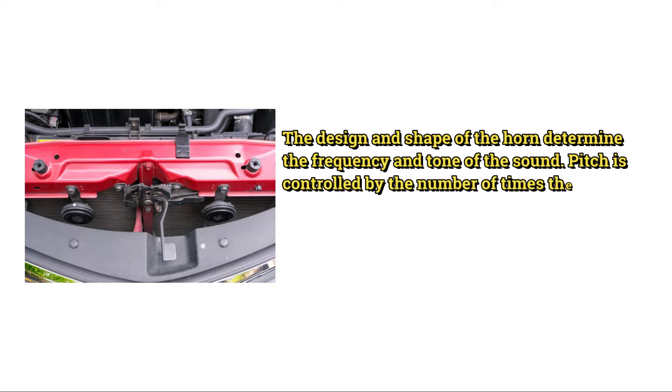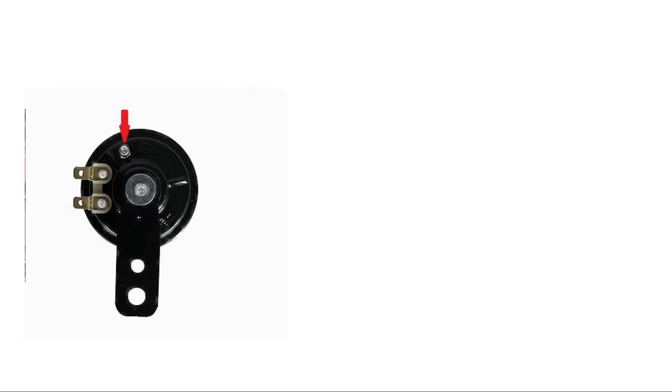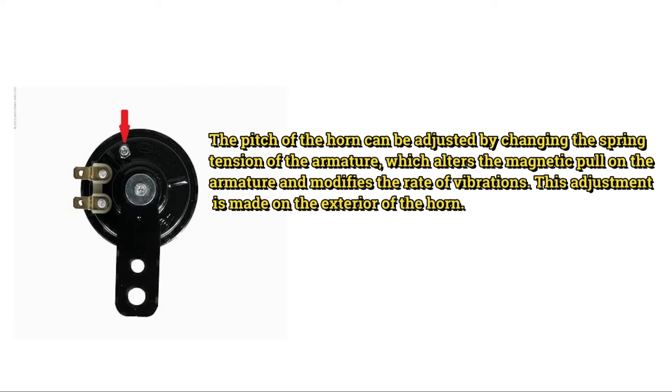Pitch is controlled by the number of times the diaphragm vibrates per second. The faster the vibration, the higher the pitch. The pitch of the horn can be adjusted by changing the spring tension of the armature, which alters the magnetic pull on the armature and modifies the rate of vibrations. This adjustment is made on the exterior of the horn.